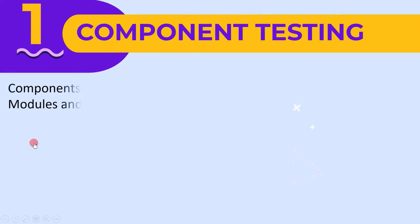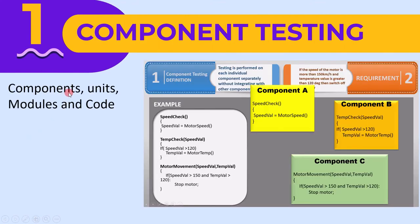Let's start with the component testing level and see what are the test objects for this level. First, test objects are a component, unit, module, or code. During definition, we saw this small piece of code, and we derive different components out of it. Each of these is referred to as a component, unit, or module. To find out these components, we need code, and these units act as a test object for the component level.